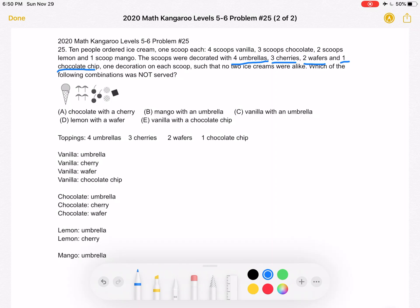And then we also have scoops which I'm going to place over here. We have four scoops vanilla, three scoops chocolate, two scoops lemon, and one scoop mango.